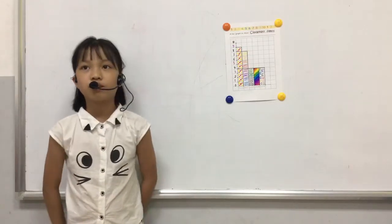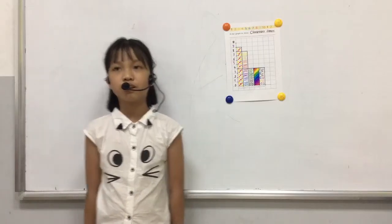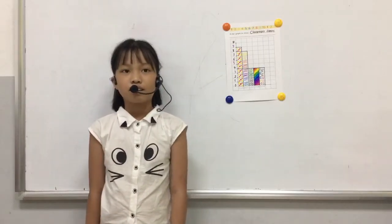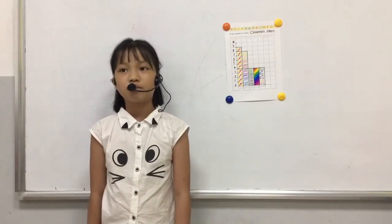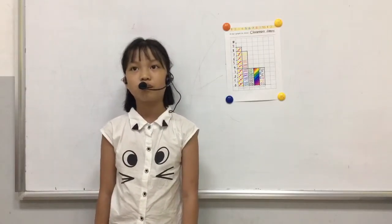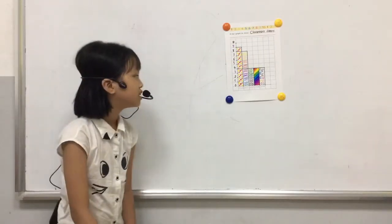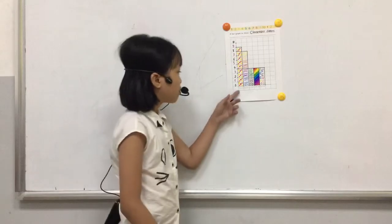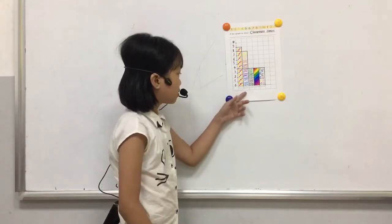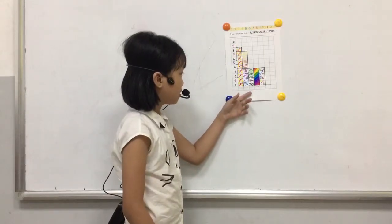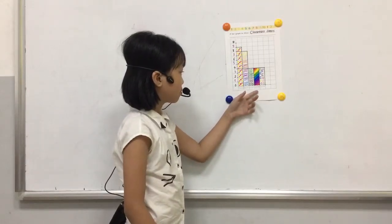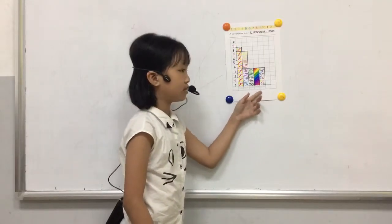A program shows me the classroom items. The classroom items are: book, pencils, rulers, notebook, and erasers.